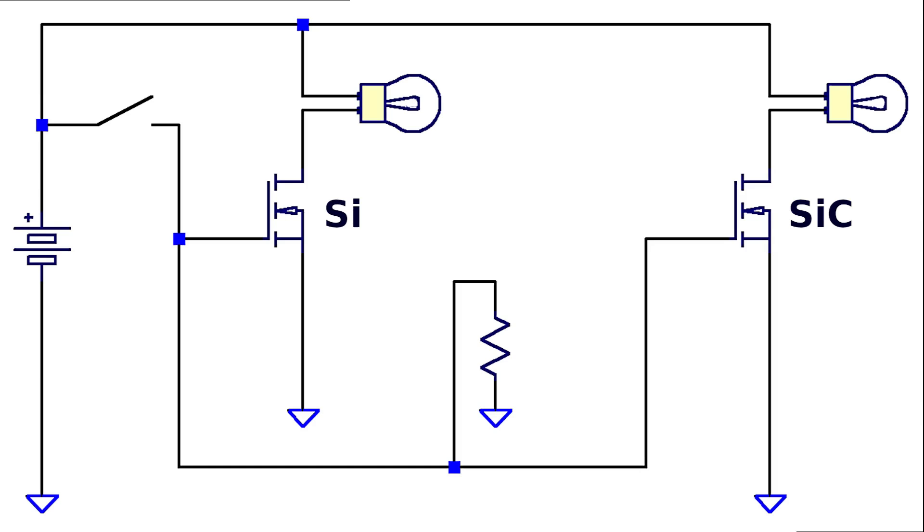The circuit schematic shows two lamps under power MOSFET control with a switch. A rather strong battery provides the power supply. The switch provides voltage to the MOSFET gates, enabling the whole system to be turned on or off.